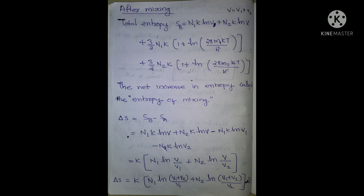When two gases are mixed, the after-mixing entropy SV is: n₁k log V plus n₂k log V plus (3/2)n₁k times [1 plus log(2πm₁kT / h²)] plus (3/2)n₂k times [1 plus log(2πm₂kT / h²)]. The entropy of mixing is ΔS = SV − SA, which gives terms with n₁k log V minus n₁k log V₁, plus n₂k log V minus n₂k log V₂.